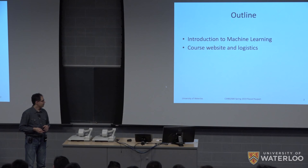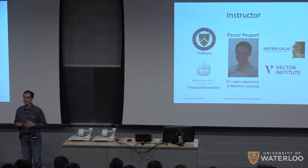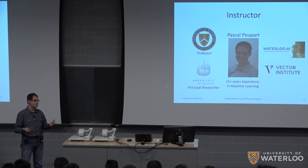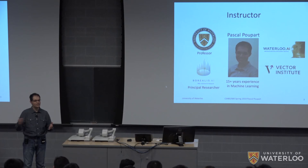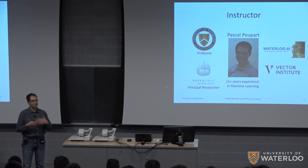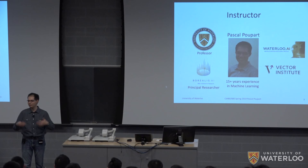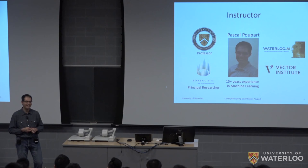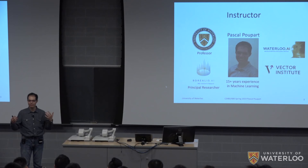Let me first introduce myself. My name is Pascal Poupart, and I'll be your instructor. I'm a professor here at the University of Waterloo — I've been a professor for 15 years. My main area of research is machine learning. Just five years ago, this course was offered roughly once a year and had maybe 30 or 40 students. Today it's offered every single term — this term we have 280 spots — and now we have multiple machine learning courses.